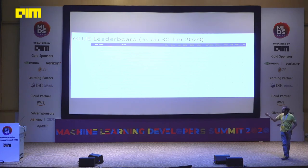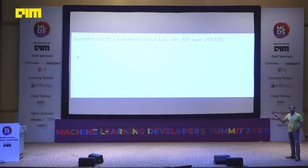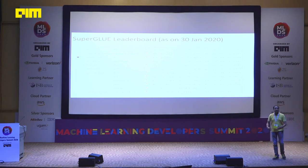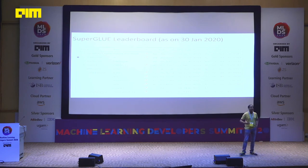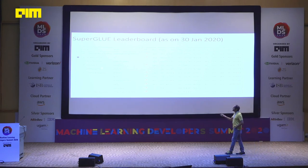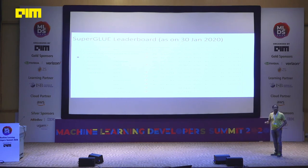Since GLUE was becoming too easy, people created SuperGLUE with more complex tasks. The SuperGLUE human baseline is 89.8. T5's score is not very far from that — almost there. These leaderboards are global — participants from academic and industry institutes worldwide spend large amounts on training these models to compete.